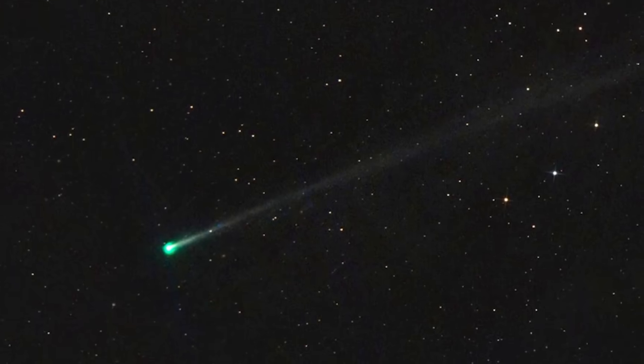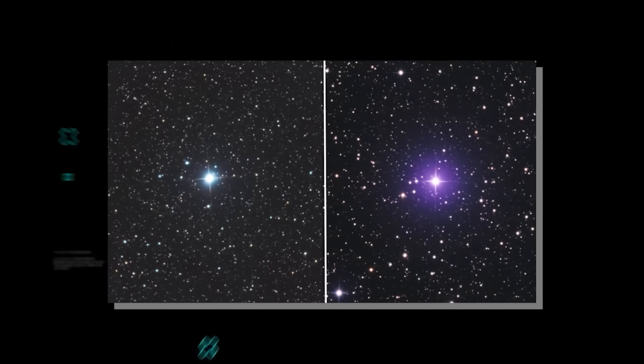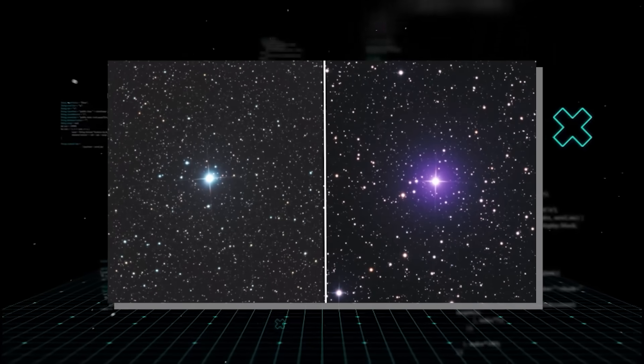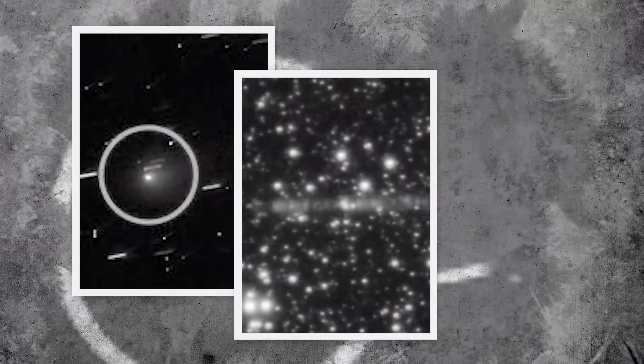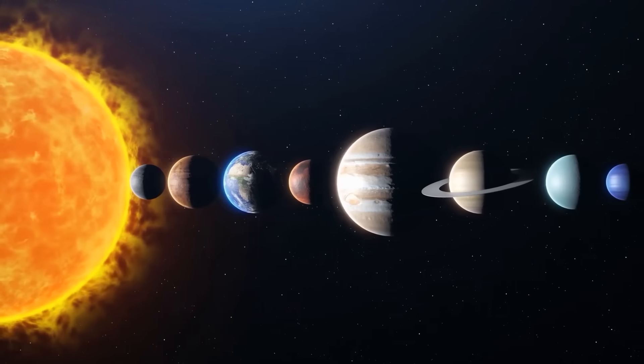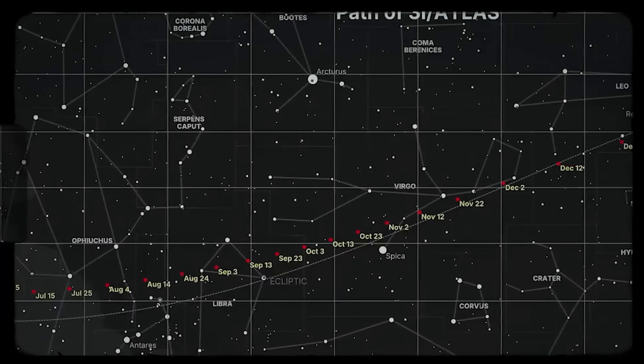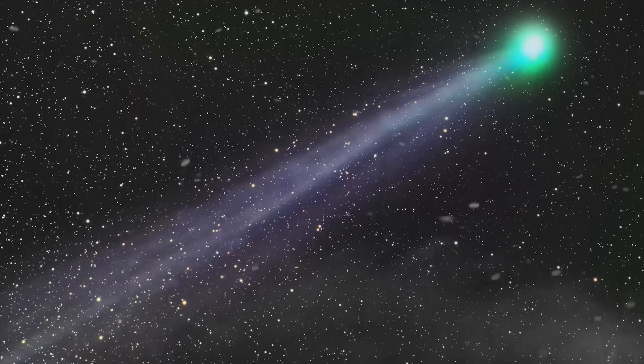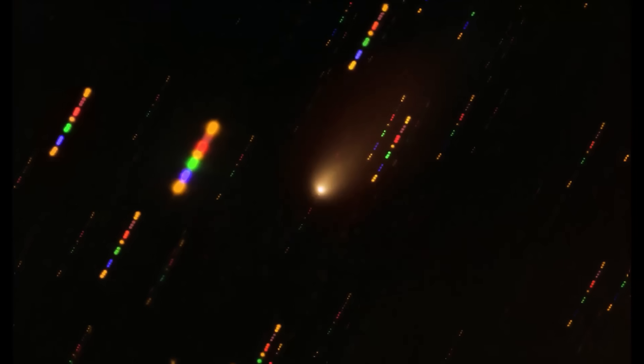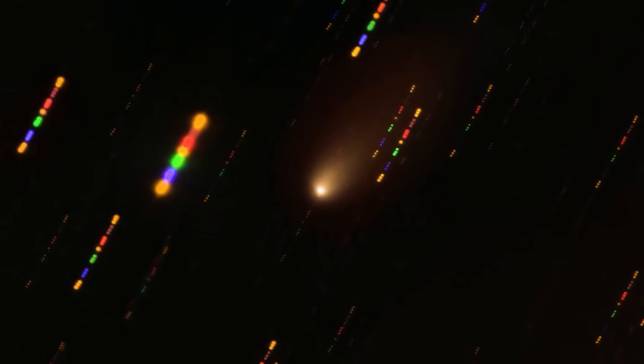Discovered on the 1st of July 2025, this object immediately set off alarms. It wasn't just its speed, a mind-bending 130,000 miles per hour, or its path, which was perfectly aligned with the planets in our solar system. The real mystery was that it was accelerating. It was getting a tiny but constant push. And the thing is, nobody could figure out why.